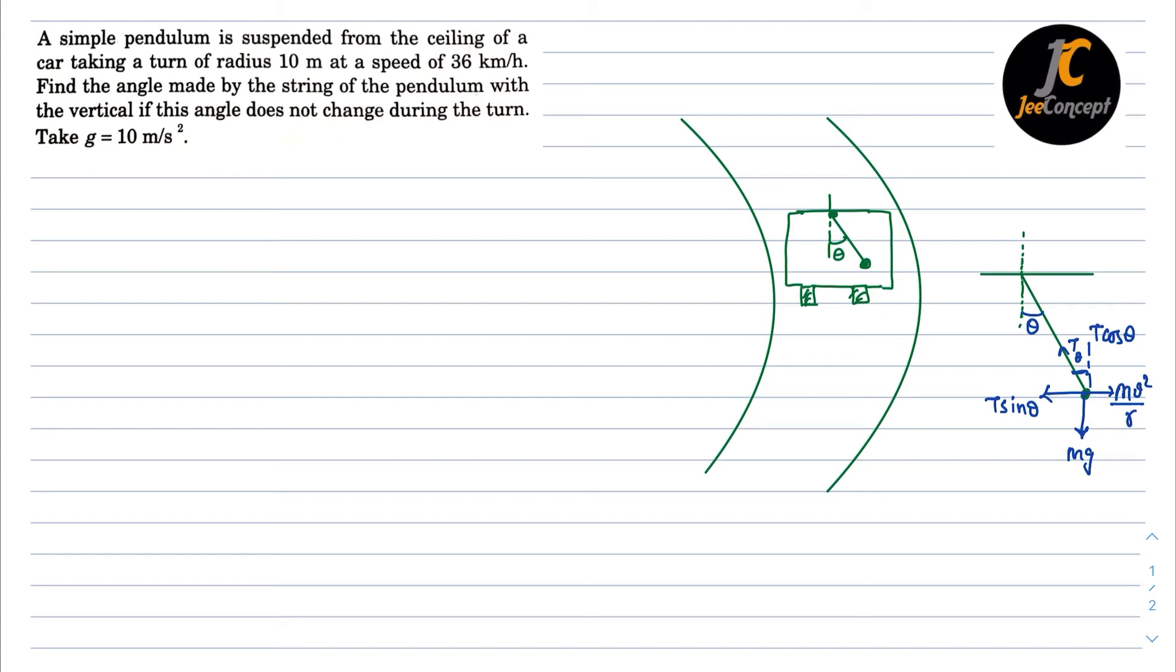So that means we can write t cos theta should be equal to mg and t sin theta is equal to mv square by r. Let's say this is equation 1 and this is equation 2. Divide 2 by 1 we will get tan theta is equal to v square upon rg.